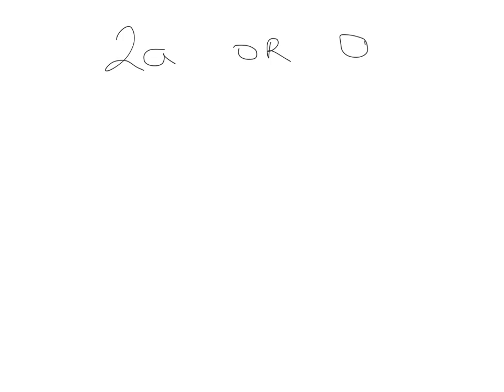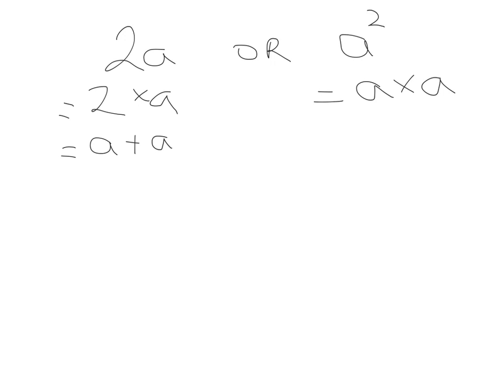The next thing I want to explain is the difference between 2A and A squared, because students often confuse these two. 2A means 2 multiplied by A — we have two A's, so another way of writing that is A plus A. Whereas A squared is the letter multiplied by itself: A multiplied by A, which is very different to A plus A.